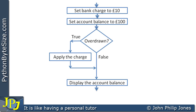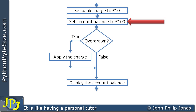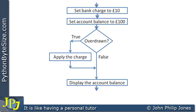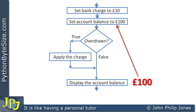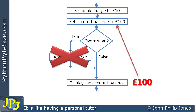I've added detail to the flowchart. The first step sets the bank charge to £10, then the balance to £100. We ask: are you overdrawn? Clearly not, since the balance is £100, so we follow the false route and display the account balance. We didn't go the true route, so we don't apply the charges — you wouldn't want to, since the account is not overdrawn. That's what we mean by selection: we selected the false route, choosing not to apply the charge.